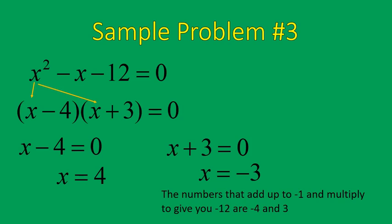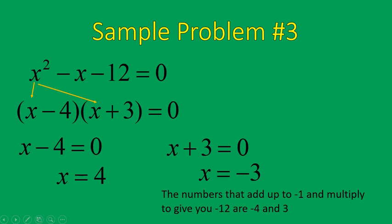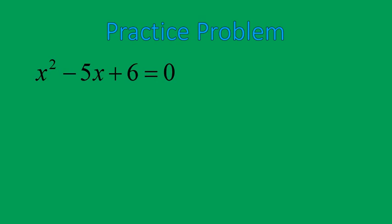You may have noticed that the last solving step is almost redundant. If you just look at your factored binomials and switch the signs, you get the answers: if it's x minus 4, your answer is 4; if it's x plus 3, your answer is negative 3. So once you get more practice, you don't necessarily need to write out that final step. Speaking of practice, here's your next opportunity — an equation with a negative middle term and a positive final term. Pause the recording and try it out.